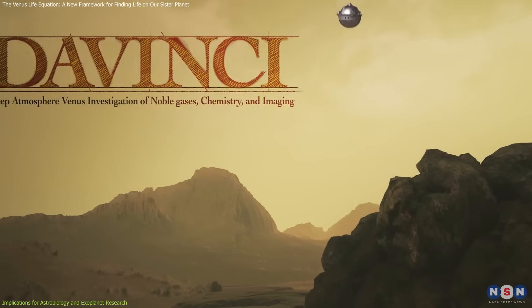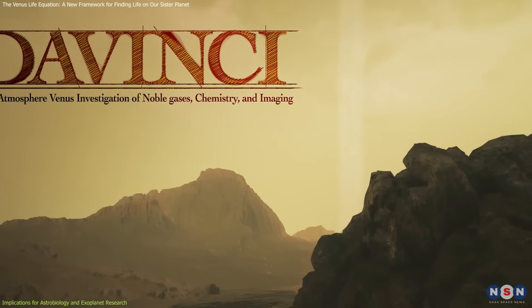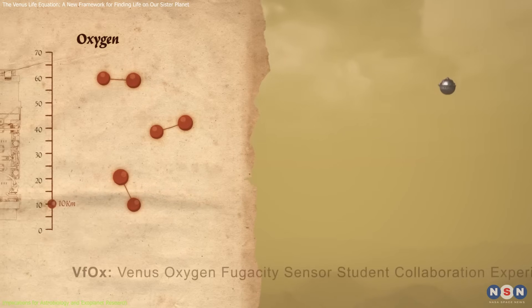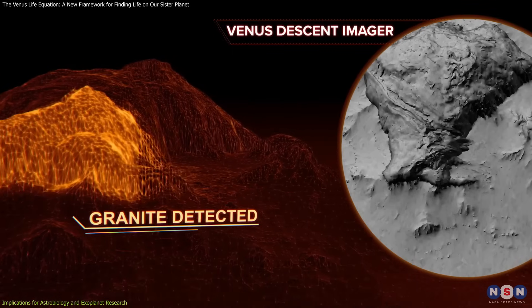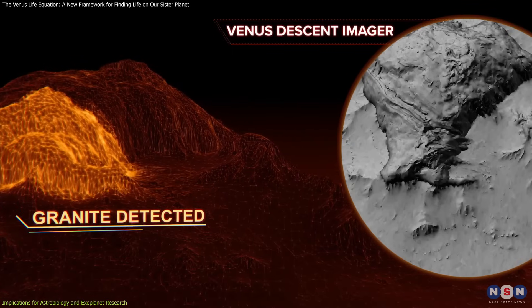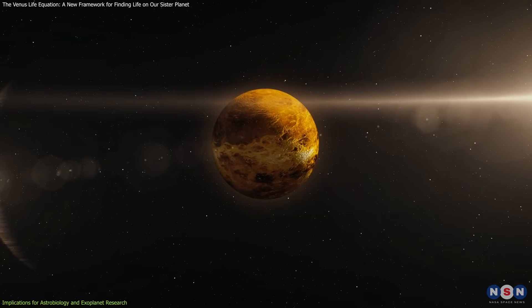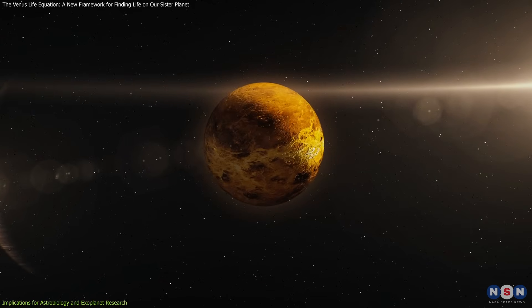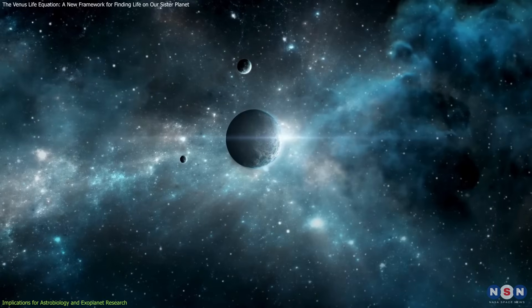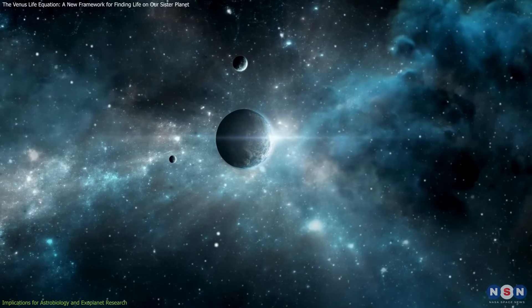Upcoming Venus missions, particularly Da Vinci Plus and Veritas, will provide new data to refine the parameters of the Venus Life Equation. Da Vinci Plus will send a probe into Venus's atmosphere, analyzing its composition, while Veritas will map the planet's surface in high resolution. These missions could revolutionize our understanding of Venus's history and habitability, offering insights that extend to exoplanet studies.